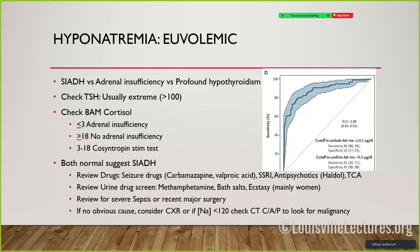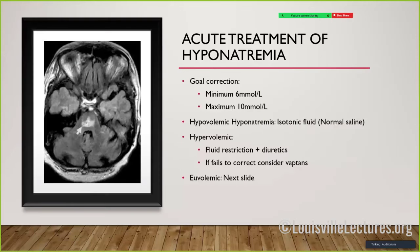If cortisol and thyroid are normal, it's SIADH. Review the drug list: seizure drugs, psych drugs, TCAs, certain drugs of abuse - ecstasy is the classic one, and some meth abusers can develop it. These are usually rapidly reversible. Finally, if there's no obvious cause, get a chest X-ray; if sodium is less than 120, some experts recommend CT chest-abdomen-pelvis. If someone has had a seizure and you've completed a full workup, you probably need to look for a malignancy or an unexpected adrenal finding.